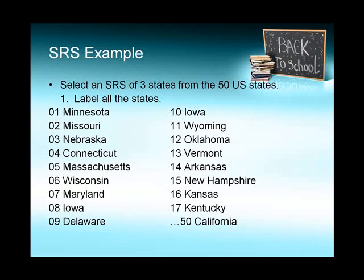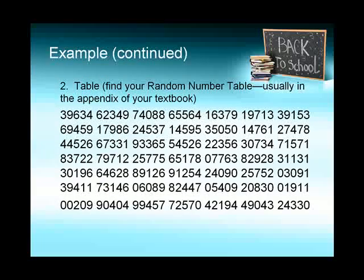Here's an example: select an SRS of three states from the 50 US states. First, label all the states. These states are in the order of the least correct to the most correct. Most people got them correct. Most people missed Minnesota. Then find a random number table. It's usually in the appendix of your textbook. As you can see, it's a bunch of numbers with spaces to help you locate a number if you're talking with someone else.